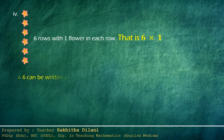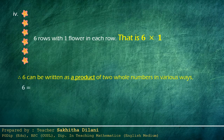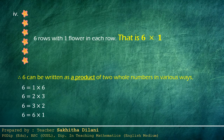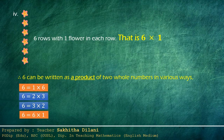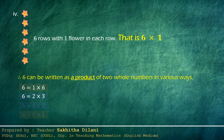Thus, six can be written as a product of two whole numbers in various ways: one times six, two times three, three times two, and six times one. However, one times six and six times one are the same product, and two times three and three times two are the same. So it is enough to write only one of each: six equals one times six, and six equals two times three.